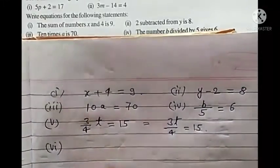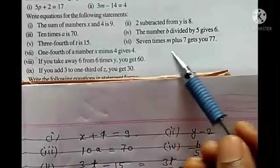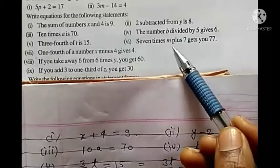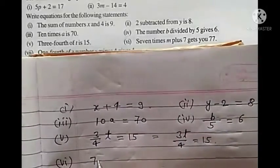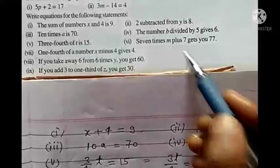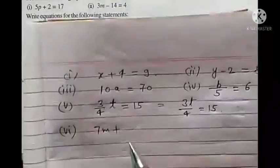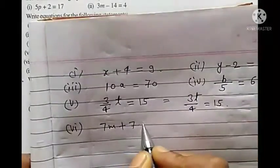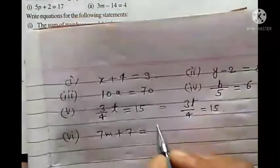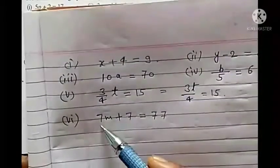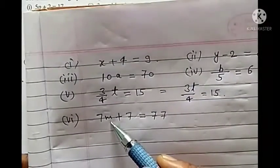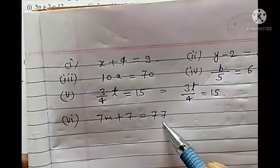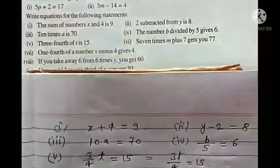Sixth: 7 times m plus 7 gets you 77. 7 times m means 7m, plus 7, gives 77. So the equation is: 7m plus 7 equals to 77.